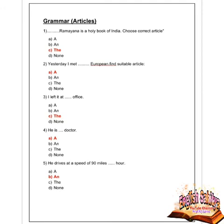Next question: he is a/an doctor — which article? Options are a, an, the, and none. Option A is correct — a. He is a doctor. Next question: he drives at the speed of 90 miles per hour — which article? Options are a, an, the, and none. Option B is correct — a. He drives at a speed of 90 miles an hour.